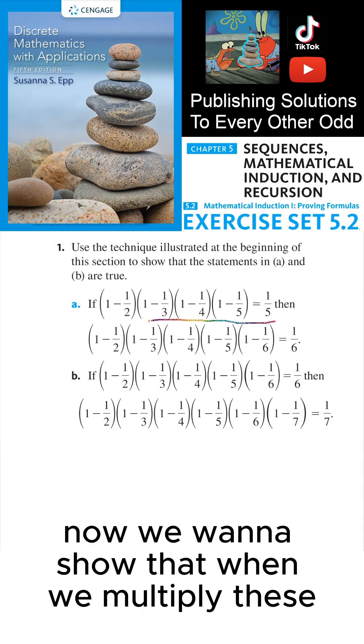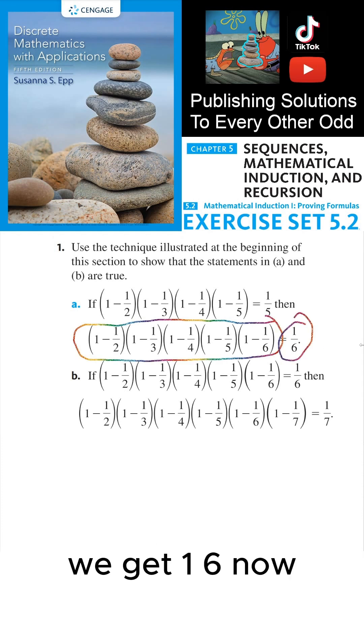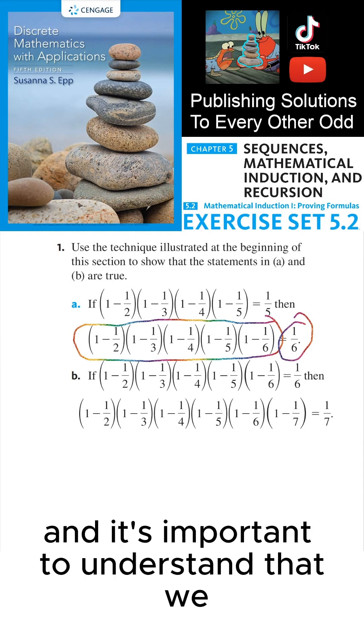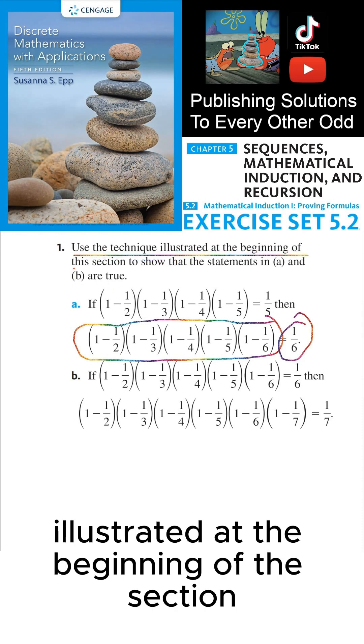Now we want to show that when we multiply these five factors together, we get 1/6. Now there's two ways of showing this and it's important to understand that we only do one of these techniques because we're supposed to use the technique illustrated at the beginning of this section.